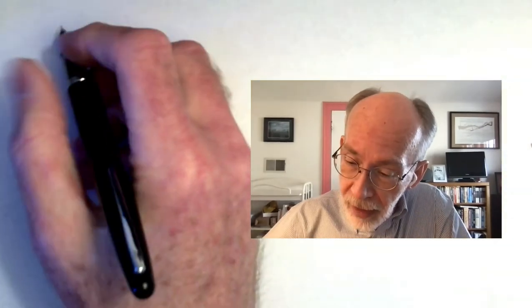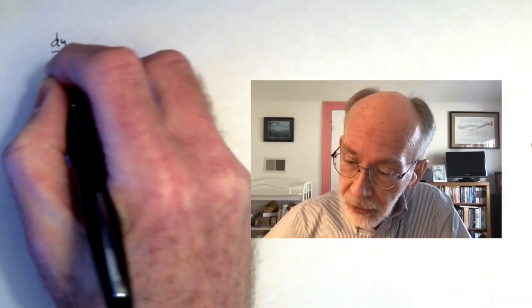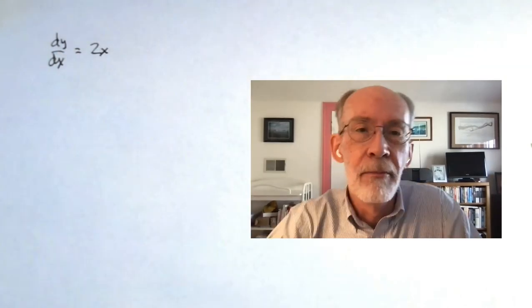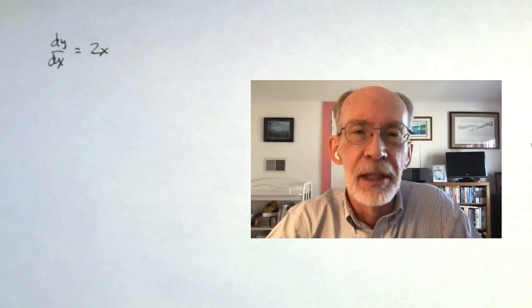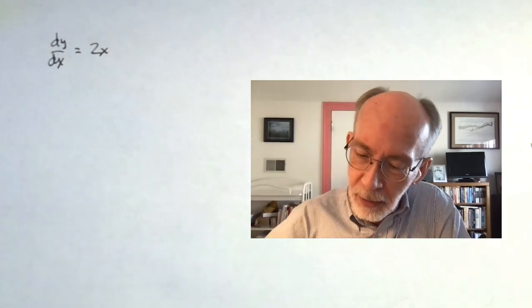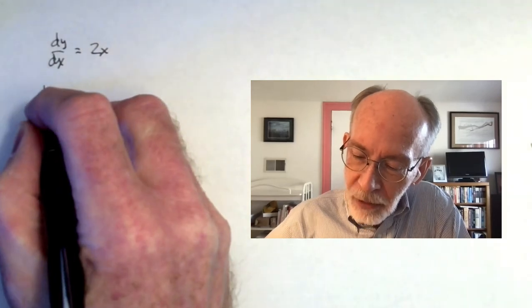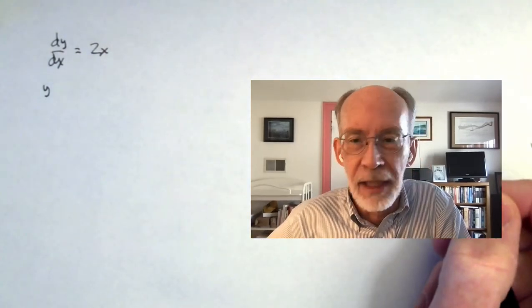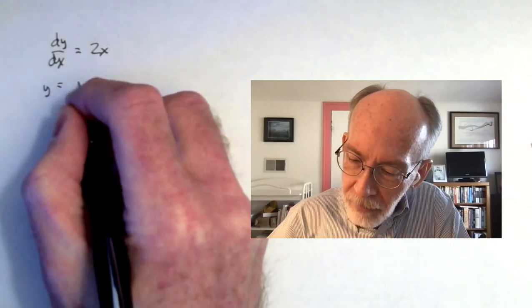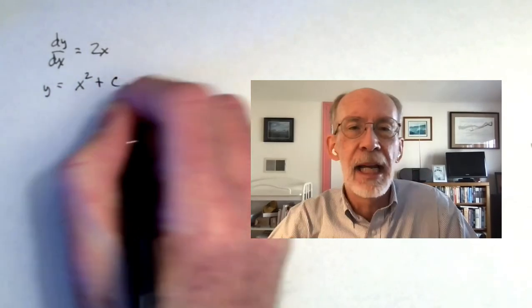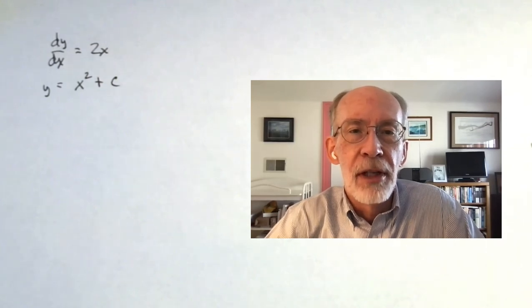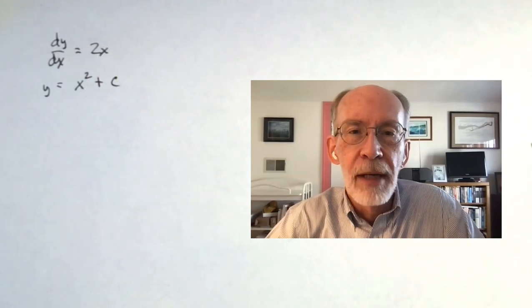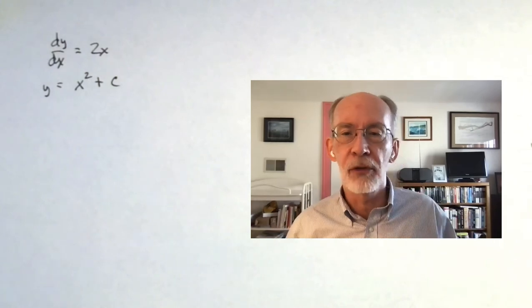We're going to start with something quite simple — something along the lines of dy/dx equals 2x, which is about as simple a differential equation as you can ever hope to encounter. All you need to do is integrate with respect to x, and of course the thing that gives you a dy/dx of 2x is x squared, or potentially x squared plus a constant. So solutions to the differential equation dy/dx equals 2x will all be of the form y equals x squared plus a constant.